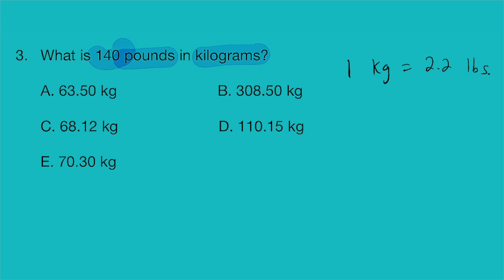And so if I know that I have 140 pounds and I'm trying to convert that to kilograms, I know that for every 2.2 pounds is going to give me one kilogram. And so all I have to do here is divide my 140 pounds by 2.2. Because that represents one kilogram. So 140 divided by 2.2 gives me 63.50. So the correct answer here is option A.